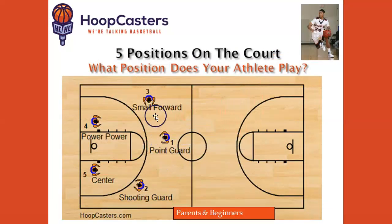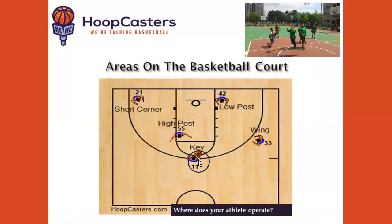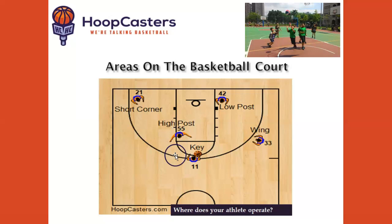We're going to talk about the position your child plays — power forward, point guard, center, shooting guard — look at the floor and start to identify the positions. We'll also teach you the different areas on the court: the wing, high post, top of the key, and so forth, so you can recognize these positions.